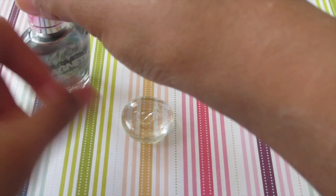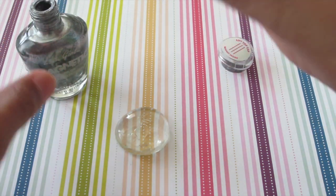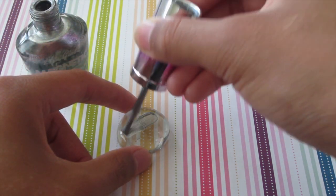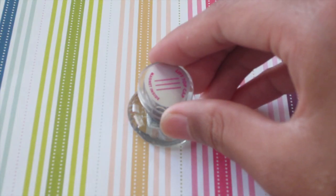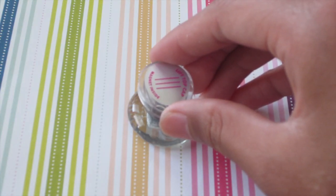You want to put one thick layer, and once you are done putting the thick layer on, you want to quickly grab the magnet. Now you want to hold the magnet as close as you can to the polish.